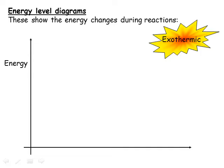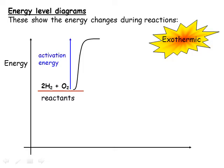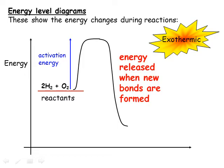We can visualise exothermic reactions using an energy level diagram, also called an enthalpy profile diagram. The y-axis is an enthalpy axis showing the amount of chemical energy. We show the level of energy in our reactants, then put in energy to break the bonds — labelled as the activation energy. Then we release energy as we form the bonds in the products. For an exothermic reaction, this is more than the energy we put in. We label the products' enthalpy level with their formulae, and label the overall energy change between the two levels as delta H.